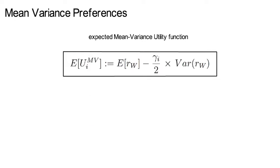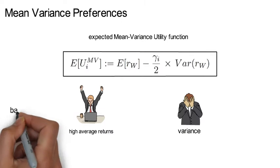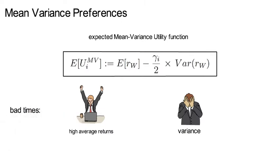Note, a mean variance preference investor likes high average returns but dislikes variance. So bad times are states where expected returns are low while the variance is large.